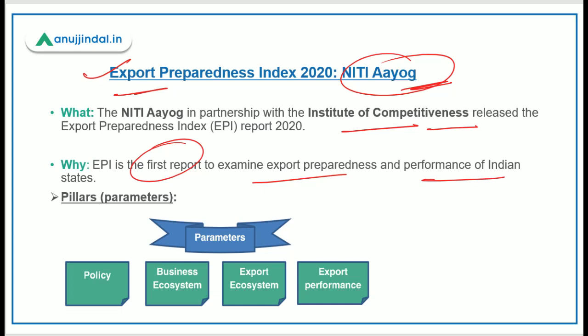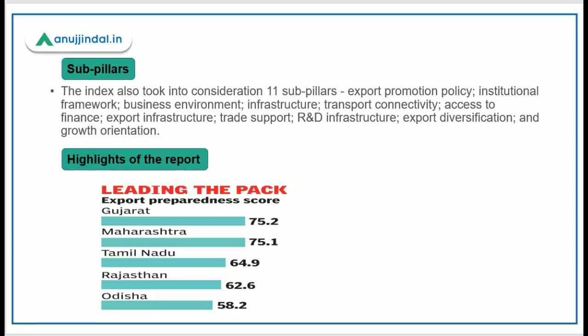The four parameters of the Export Preparedness Index are: number one, policy; number two, business ecosystem; number three, export ecosystem; and number four, export performance. This index has been created by NITI Aayog and the Institute of Competitiveness.